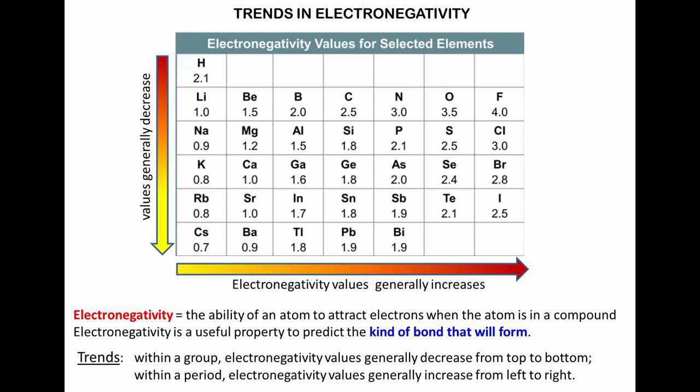What are the trends in electronegativity? Electronegativity is the ability of an atom to attract electrons when the atom is in a compound. Electronegativity is a useful property to predict the kind of bond that will form. The different kinds of bonds will be discussed in later chapters. Look at the electronegativity values for some selected elements. Within a group, moving from top to bottom, the values generally decrease. Within a period, moving from left to right, the electronegativity values generally increase.